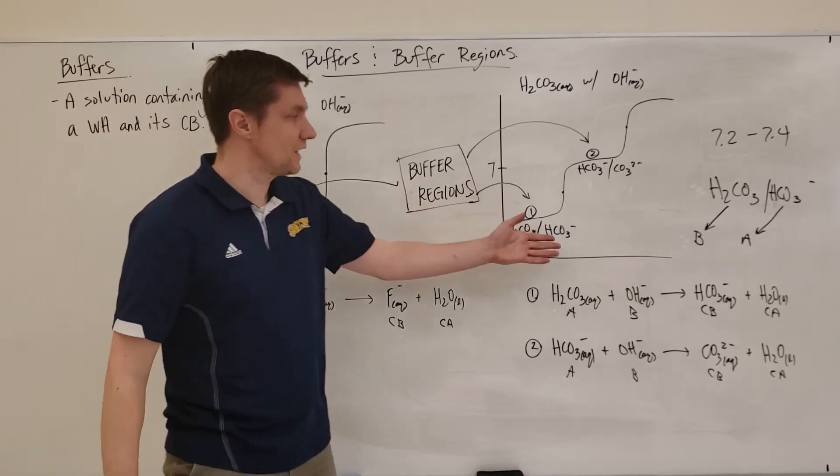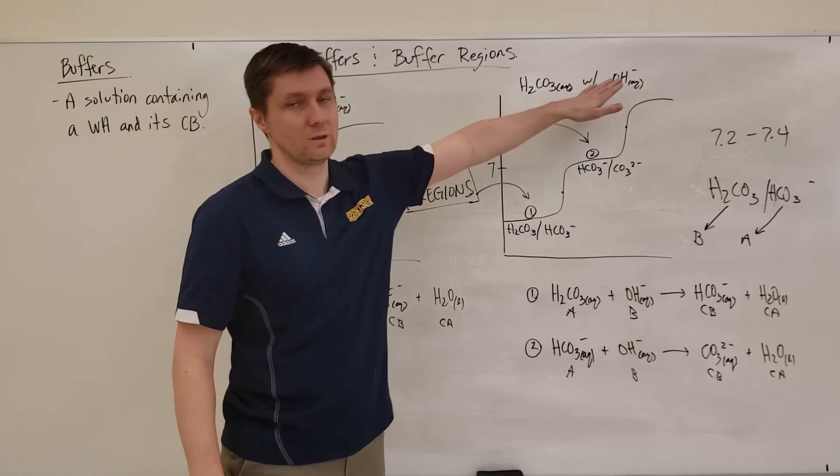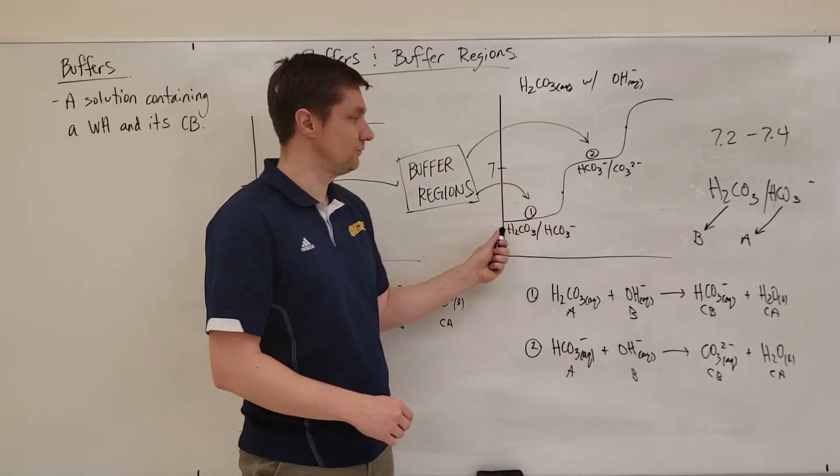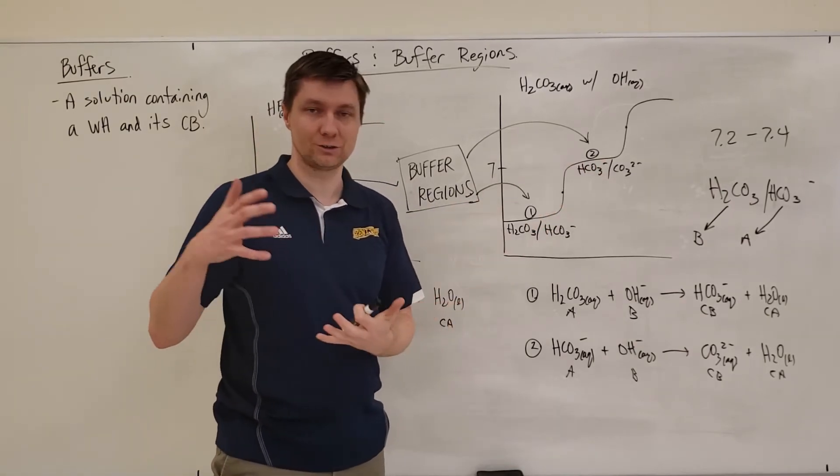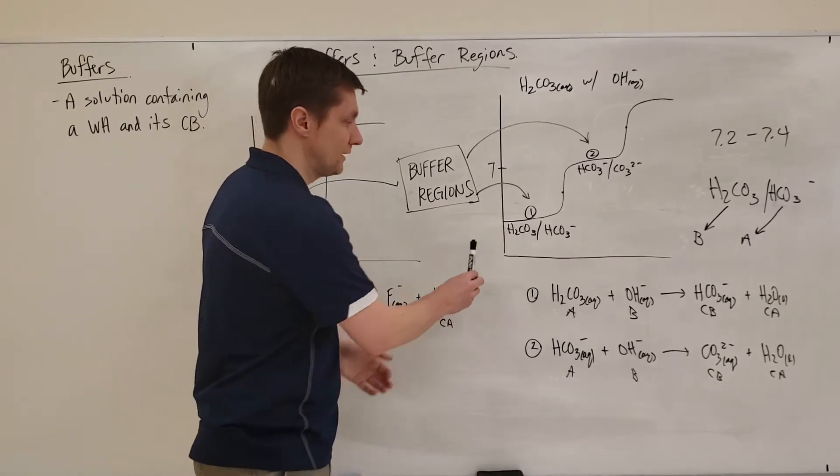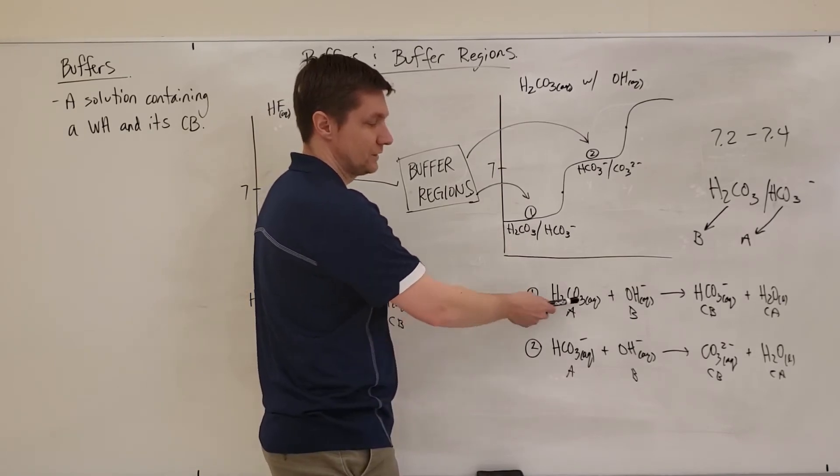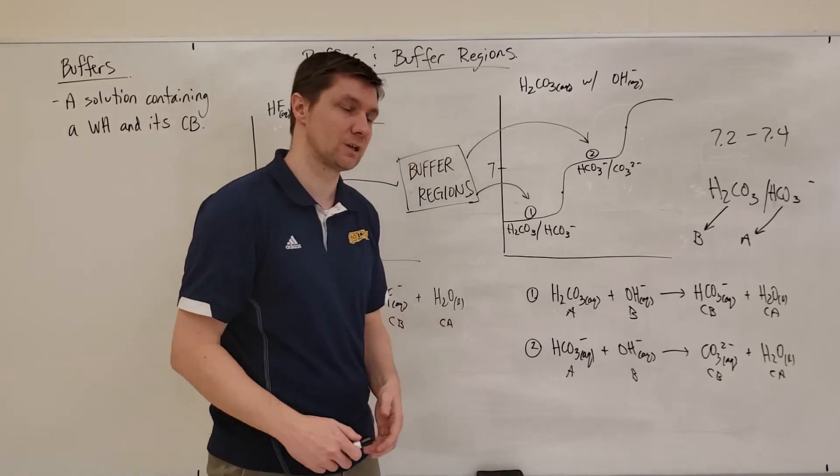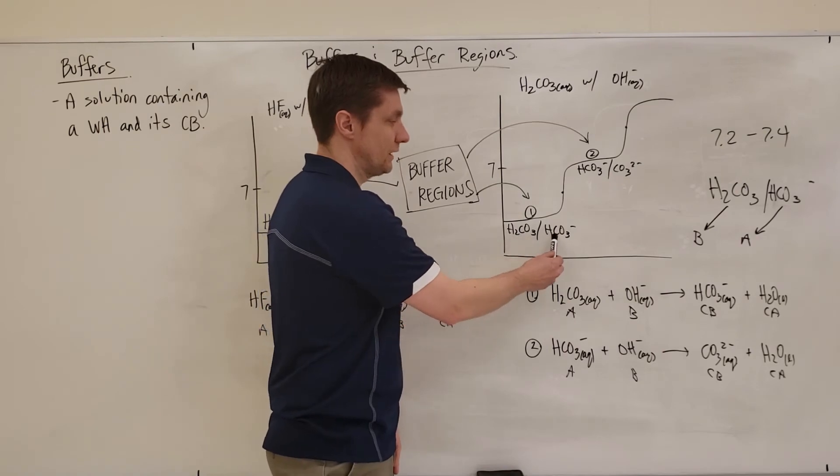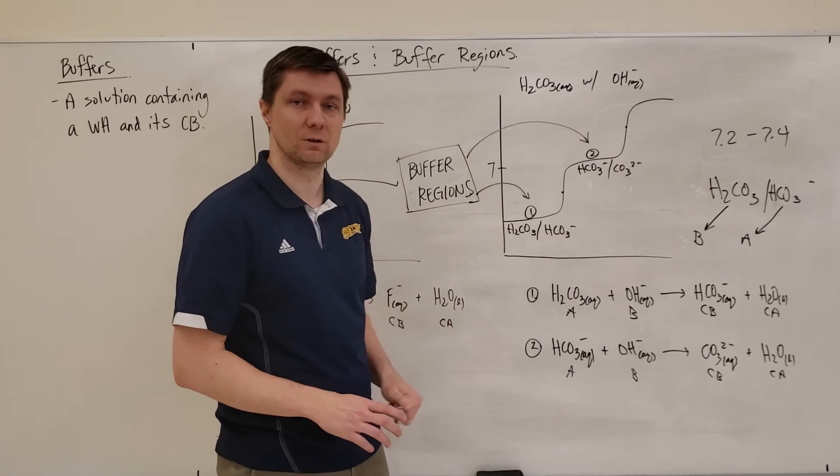If you take a look at this example over here with the polyprotic weak acid, carbonic acid with a strong base, you can see I've got my two equivalence points. But because I've got these two flat regions here, I've got two different Bronsted-Lowry equations that are occurring. So as I'm adding my hydroxide ions to this, the first reaction that's going to take place is this one where I've got the carbonic acid reacting with the hydroxide. And I make my hydrogen carbonate ions in solution. And so this is a weak acid with its conjugate base, a buffer region. And this is a buffer. You can see the pH stays relatively constant.